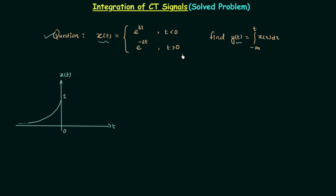When t is greater than 0, the definition of X(t) is e raised to power minus 2t. Here we have 1 over e^(2t) since t is positive, and as t increases the value of X(t) decreases, but the decrement is not as fast compared to e raised to power 3t. So we will have a waveform like this.